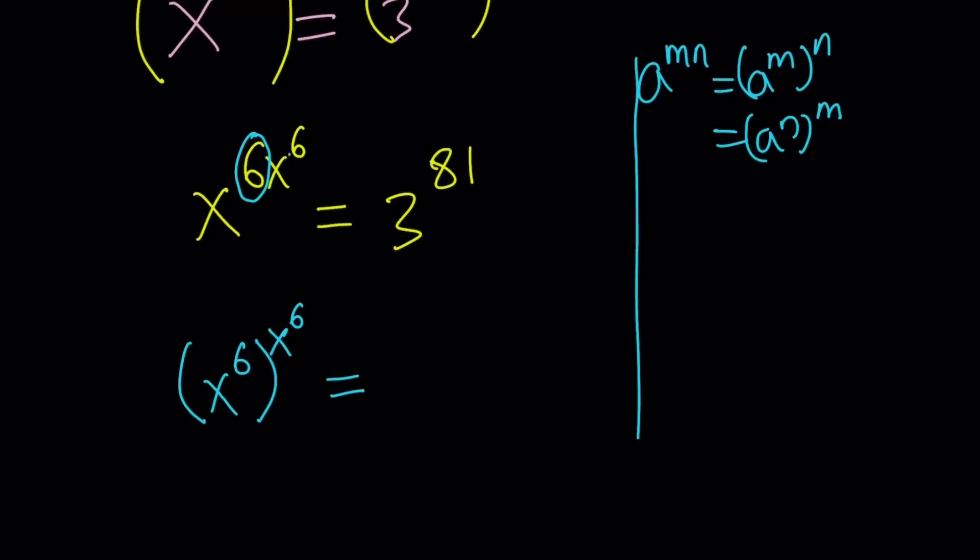There's a couple options. 3 to the power of 81. Since 3 squared is 9, I can write it like 3 to the second to the power of 81 over 2. This is going to be 9 to the power of 81 over 2. But the base and the exponents are not going to be the same.